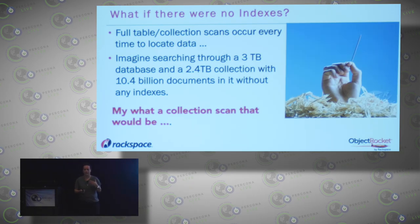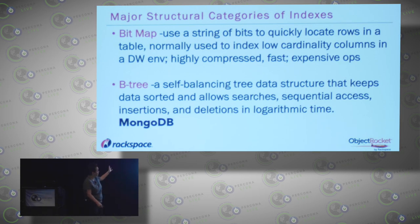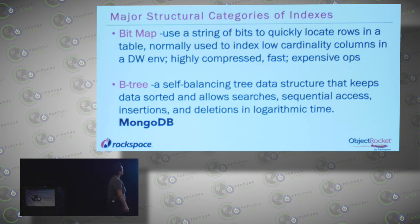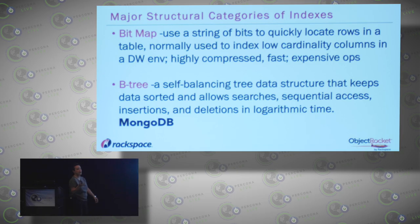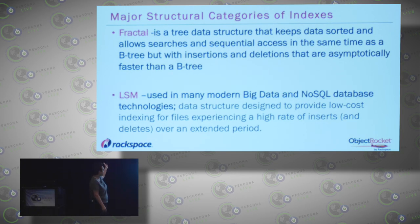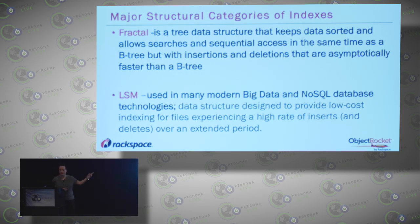With indexes in all databases — not just NoSQL but also relational — you get four basic kinds. First, bitmap indexes, which point back to bits, good for low-cardinality data and data warehouse environments — fast and compressed. Then your Btree, which a large portion of database technologies use, including MongoDB. Then newer-style things used by some NoSQL technologies, such as fractal trees — Tokyo uses those. And then LSM as well.